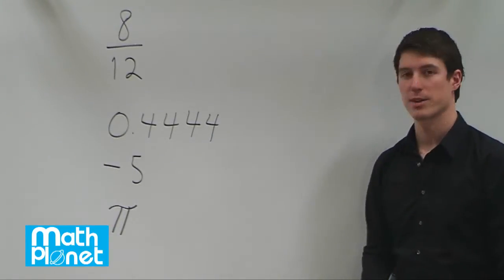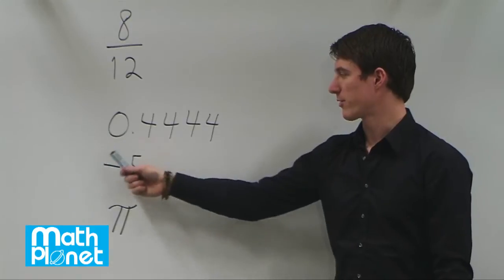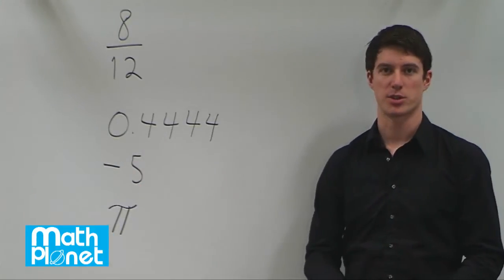This is just a number, negative 5. We can say negative 5 over 1, but it's fine as it is. Negative 5 is a rational number.